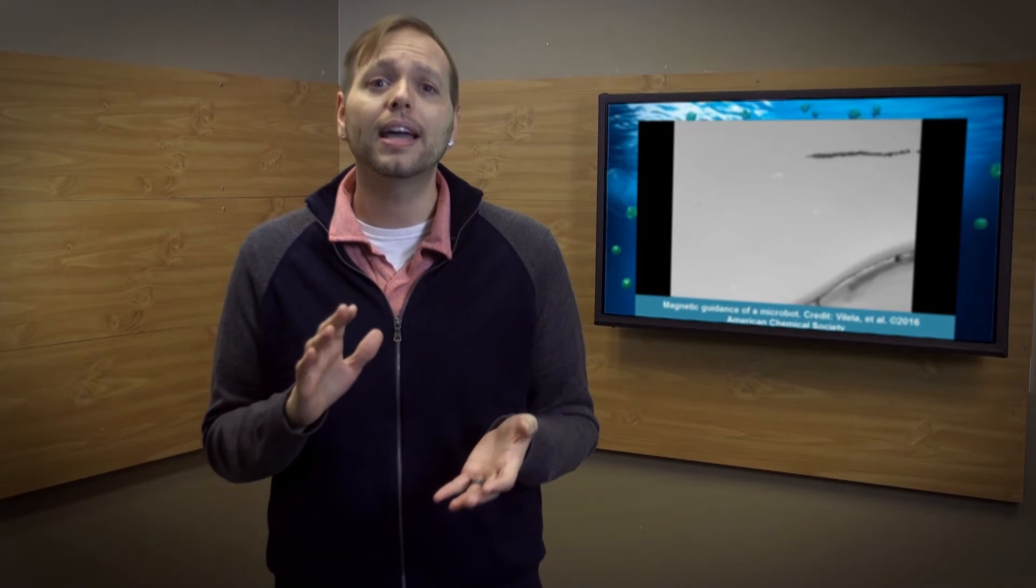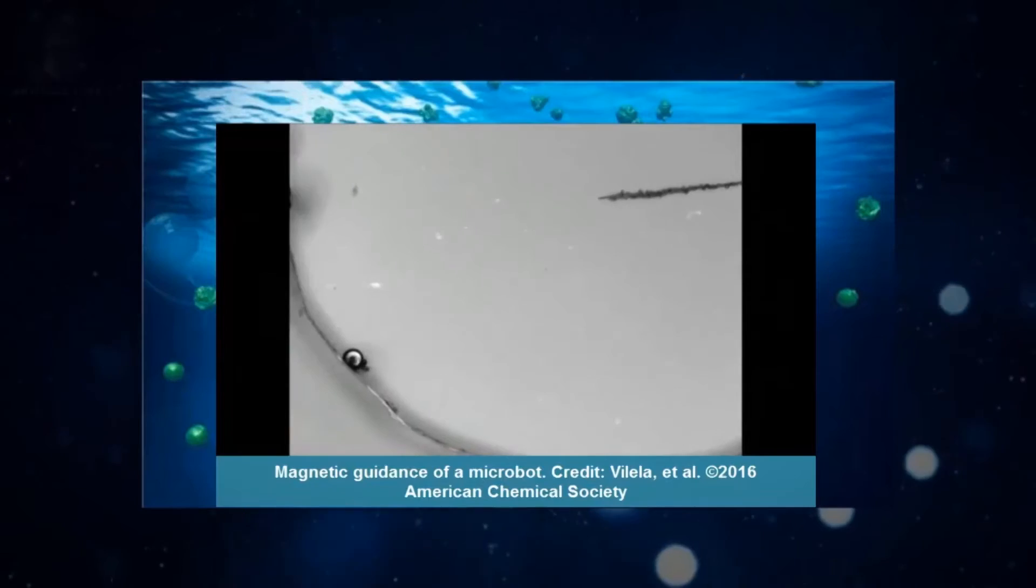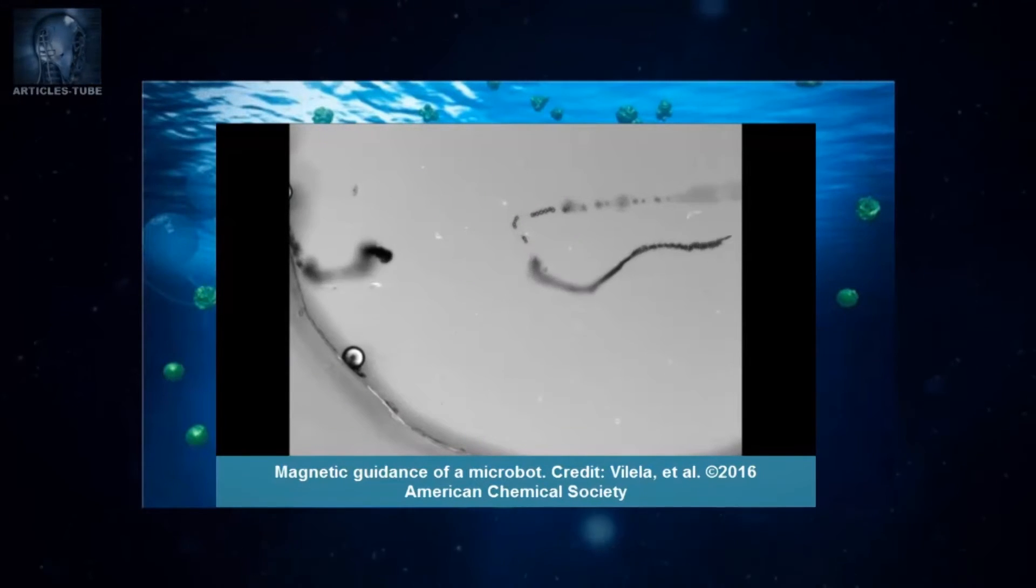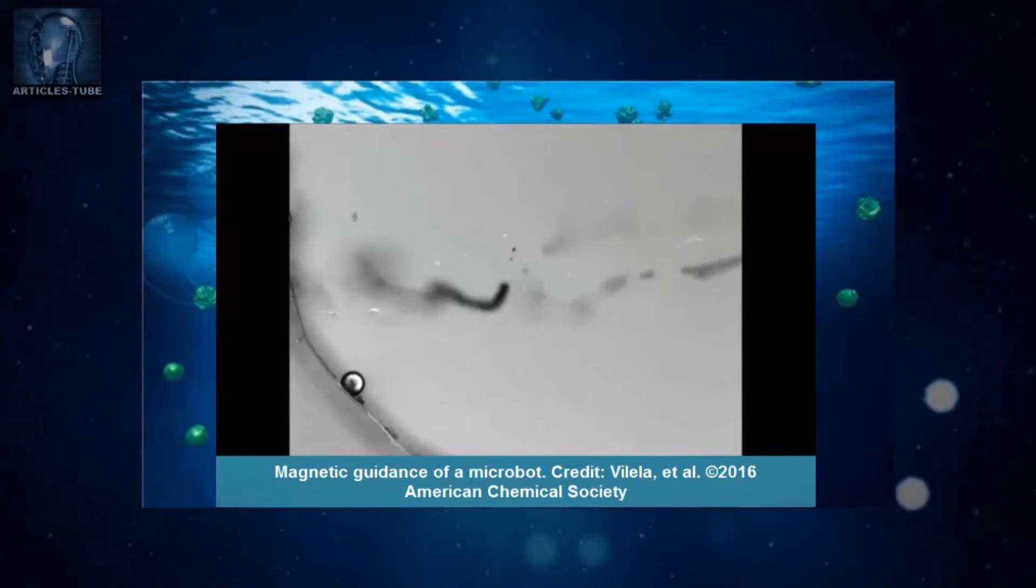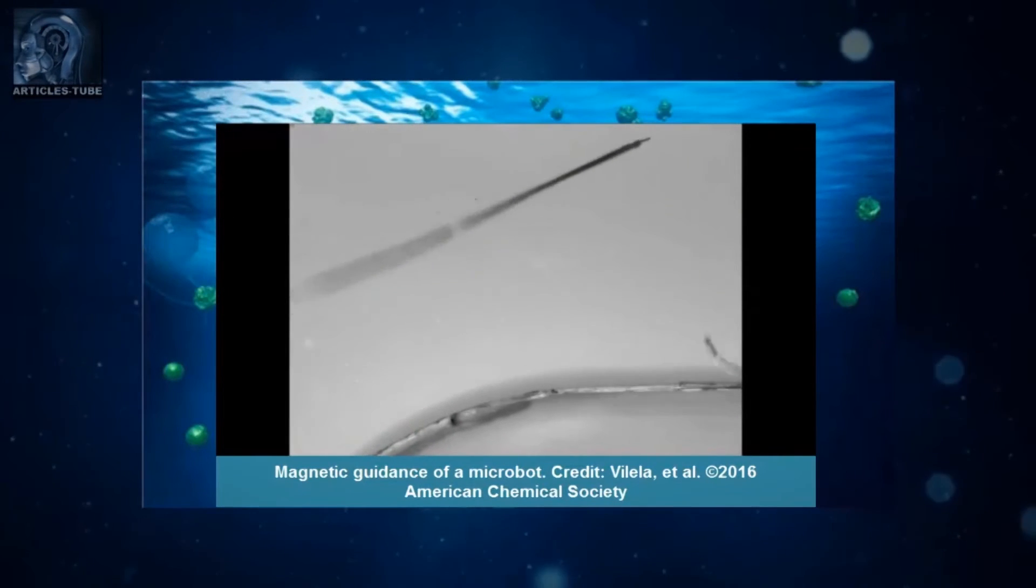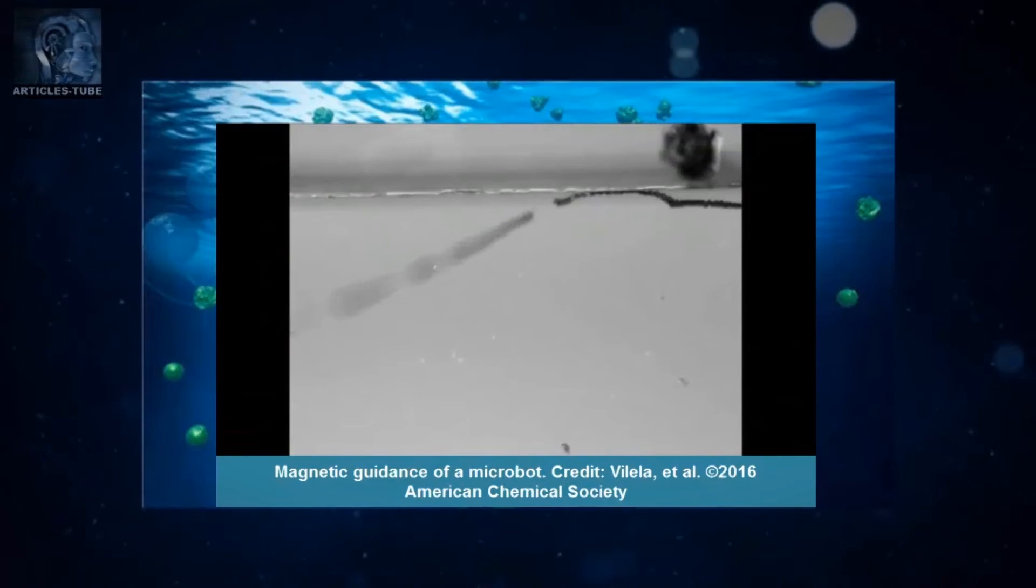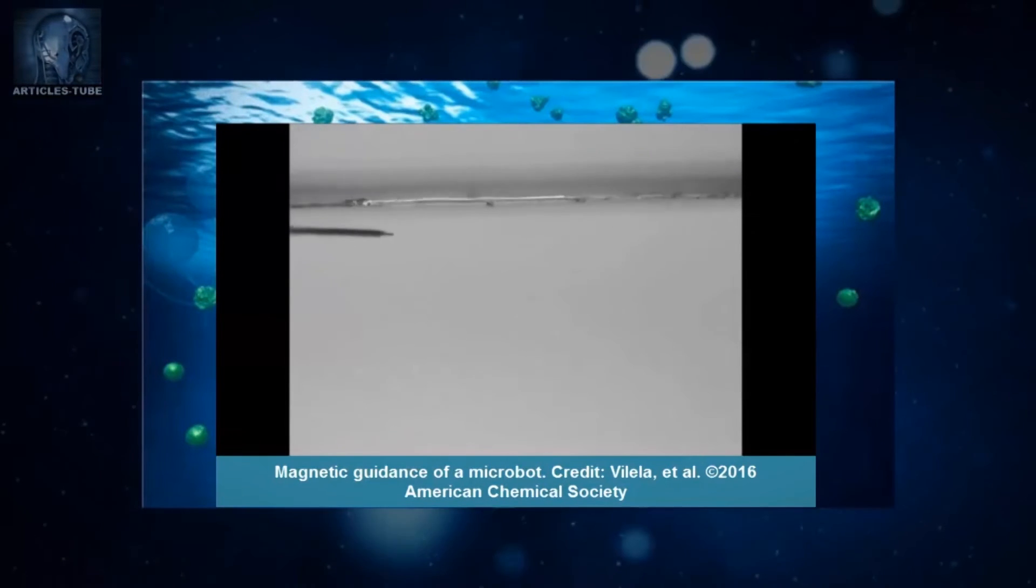The nanobots have three key components—a graphene oxide exterior to absorb lead or another heavy metal, a nickel core that enables researchers to control the nanobots' movements via a magnetic field, and an inner platinum coating that functions as an engine and propels the bots forward via a chemical reaction with hydrogen peroxide.